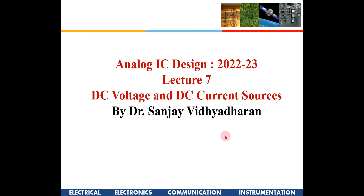Good afternoon. In the last few classes we learned about single stage amplifiers and differential amplifiers. In both those topics we saw certain current sources used to bias the circuit, and also certain DC voltages used for biasing. Today we are going to see how to design those current sources and how to get those DC voltages required for biasing.